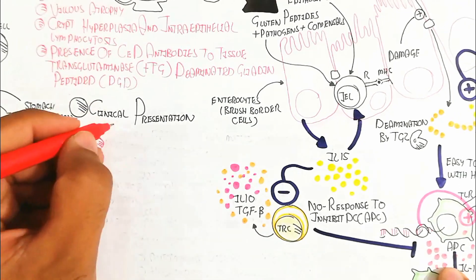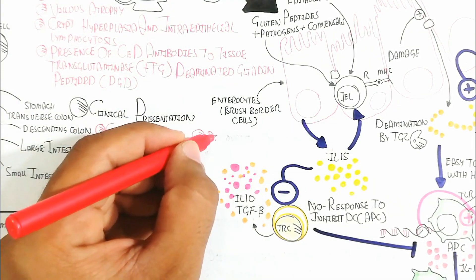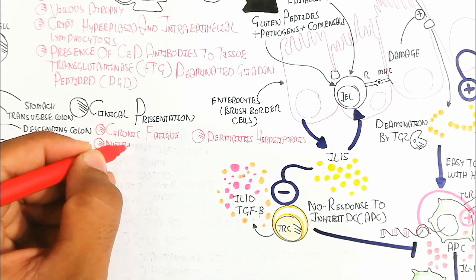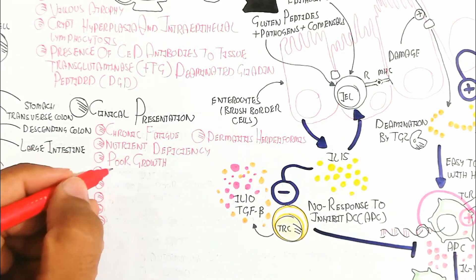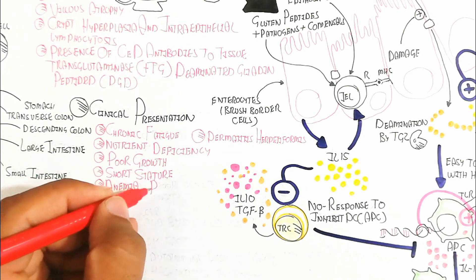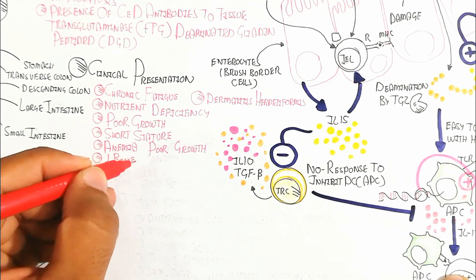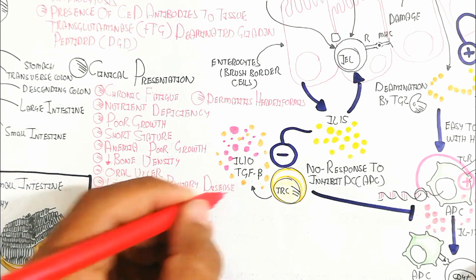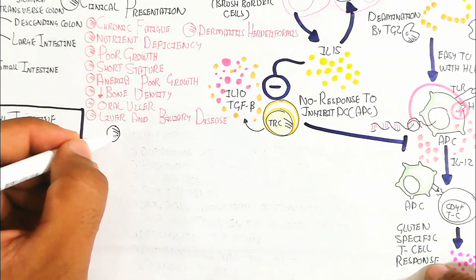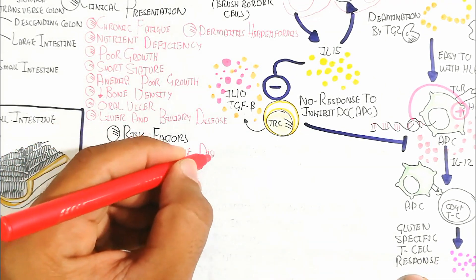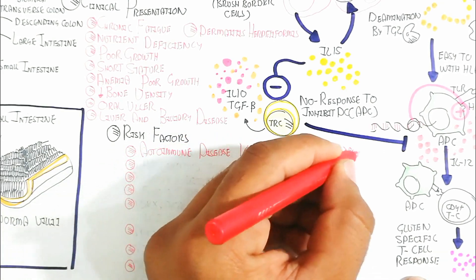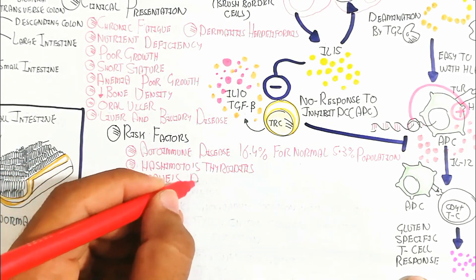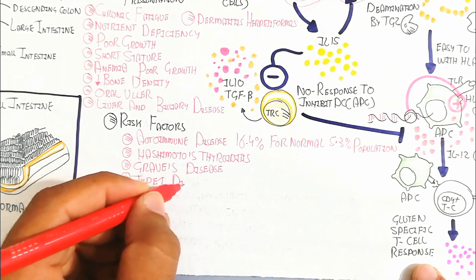Clinical presentations include chronic fatigue, dermatitis herpetiformis (a reddish skin rash), and nutrient deficiencies such as vitamin B12, iron, and fat deficiency. Poor growth, short stature, and anemia occur due to less iron absorption. Bone density decreases due to less calcium absorption, and oral ulcers and liver and biliary disease may occur. Autoimmune disease risk is 16.4% in celiac patients versus 5.3% in the general population.